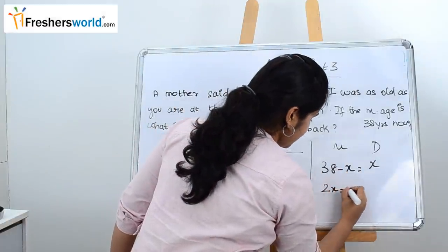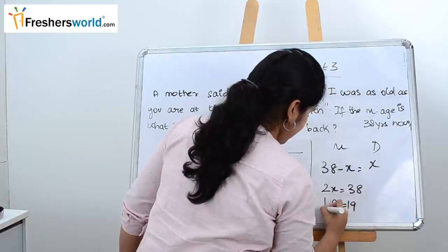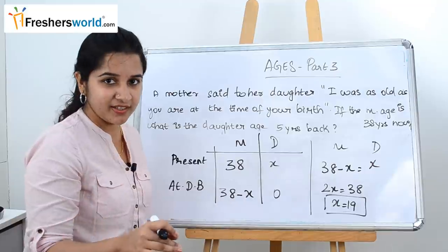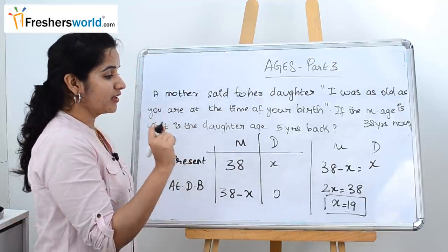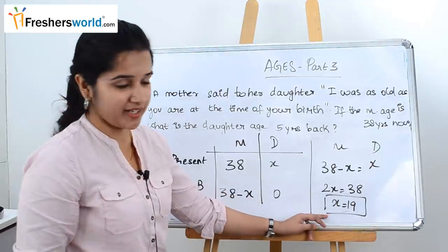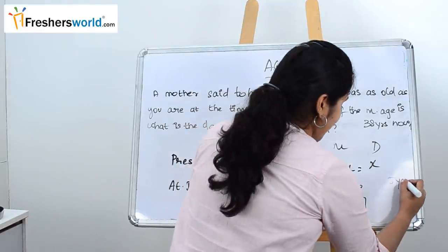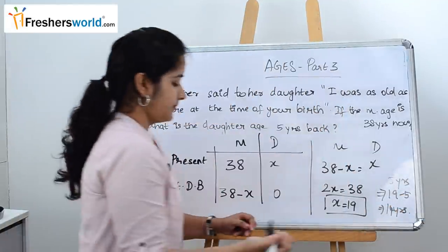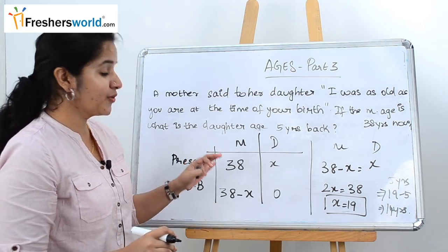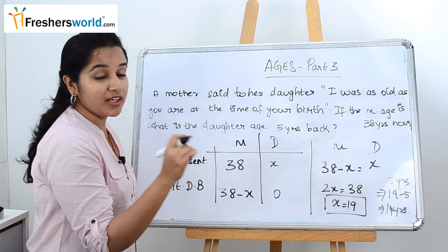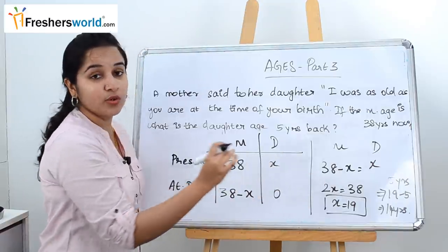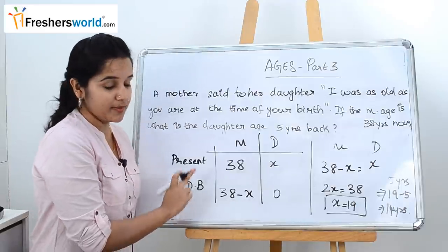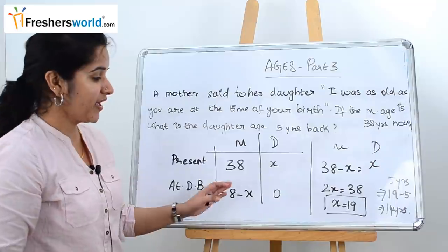Solving: 2x equals 38, so x equals 19. The current age of the daughter is 19. But the question asks for the daughter's age five years back, which is 19 minus 5 equals 14 years. Note that they can also ask for the mother's age at the daughter's birth, which would be 38 minus 19 equals 19.